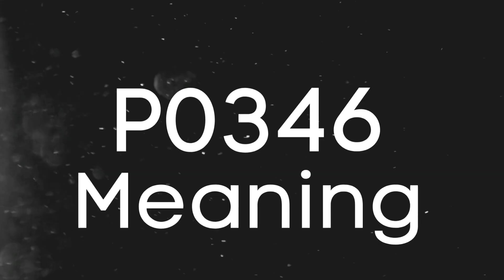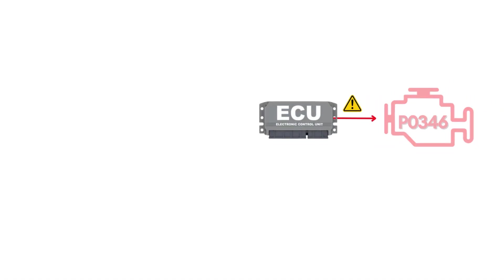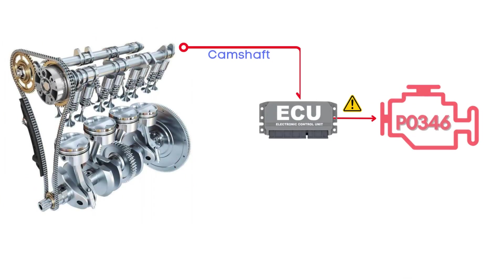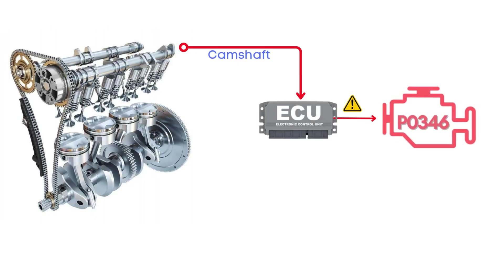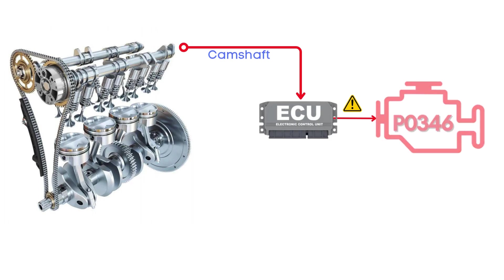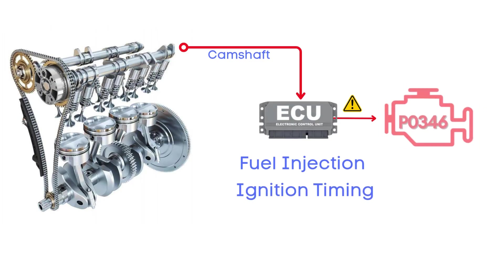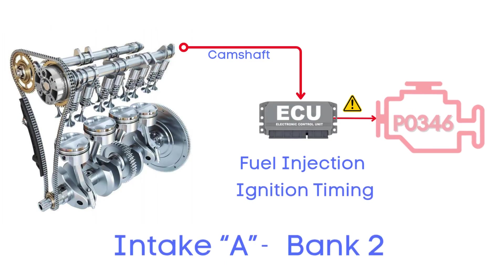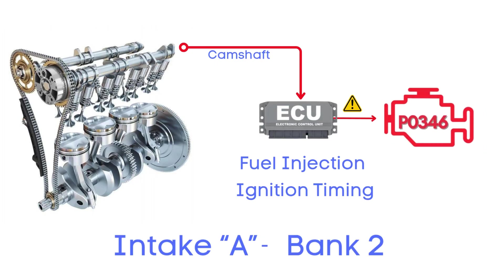First, let's understand what the P0346 code is. The P0346 code means that the ECM detects that the signal coming from the camshaft position sensor is outside of the expected range. This sensor plays a super important role, because it helps the ECM figure out the exact position of the camshaft, which it needs in order to manage fuel injection and ignition timing. It indicates an issue with the camshaft position actuator circuit for bank two, specifically referring to the intake camshaft.